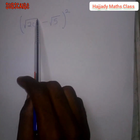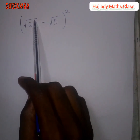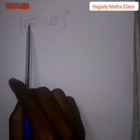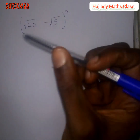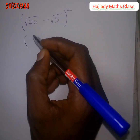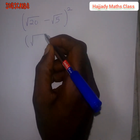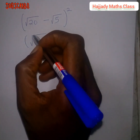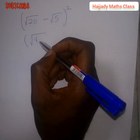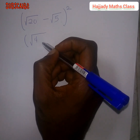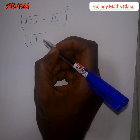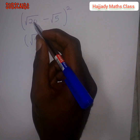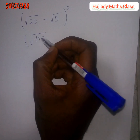In solving this, we need to solve what's inside the bracket first. To do this, we simplify √20 by looking for a perfect square that can easily divide 20. The minimum perfect square that divides 20 is 4. Perfect squares are numbers whose square roots we can find without a remainder. So the two factors of 20 are 4 times 5.